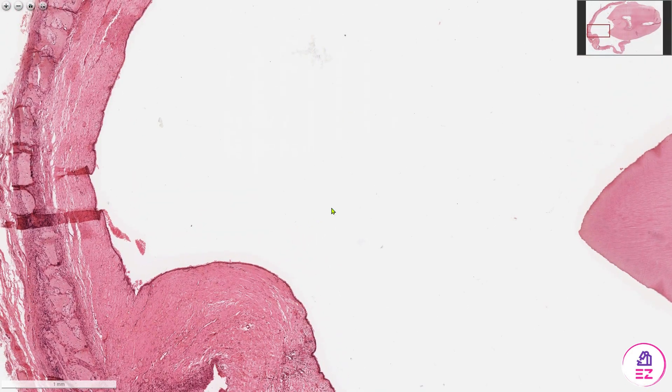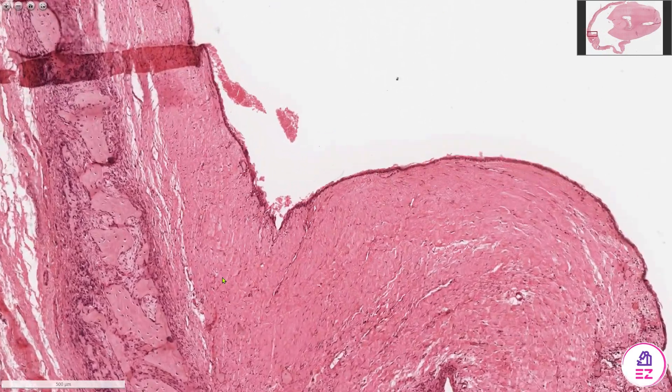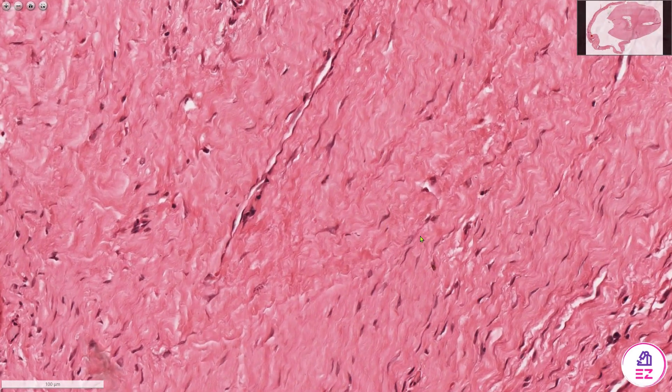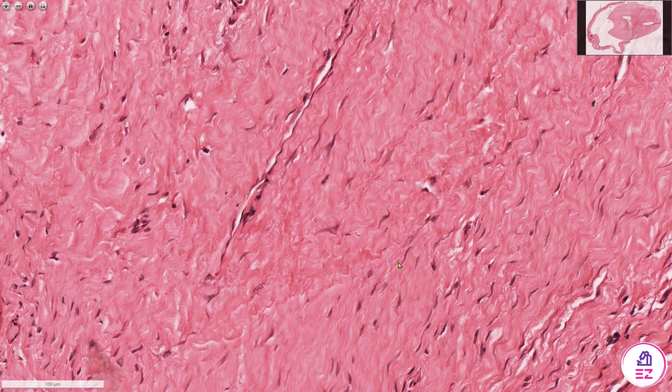We have a lining and a lumen. So if we look at the wall of the cyst to begin with, it's very fibrotic. These wiggly cells are probably fibroblasts, but I'm not seeing extensive inflammation like I did in the radicular cyst.